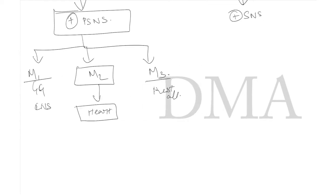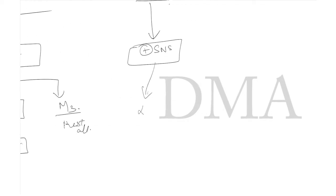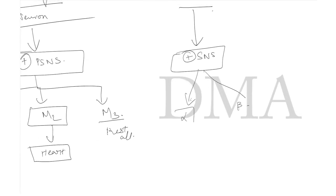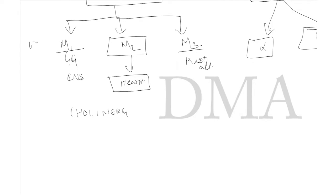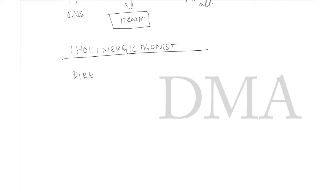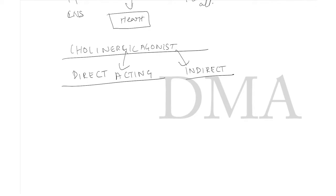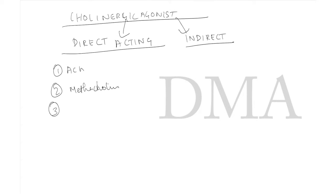The sympathetic nervous system contains alpha and beta receptors. Direct acting cholinergic agonists include acetylcholine, methacholine, bethanechol, pilocarpine, and cevimeline.